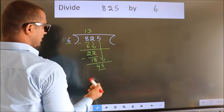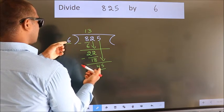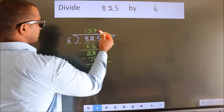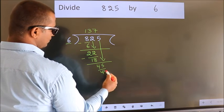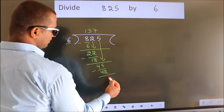So, 45. A number close to 45 in 6 table is 6 sevens, 42. Now, we subtract. We get 3.